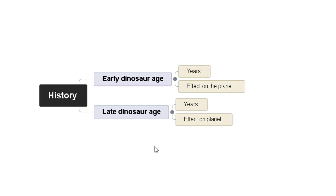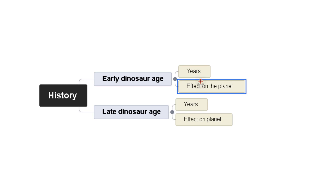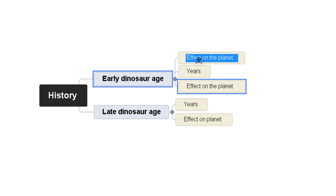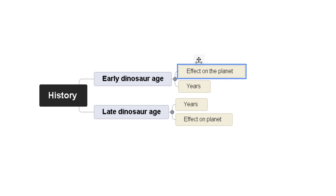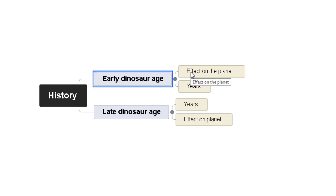As I mentioned earlier, about working from the middle and working clockwise — you might look at that and think, 'Actually, I want to talk about effects on the planet first.' So hold the left button, drag that above, keep dragging to the top, and drop it. You can move branches to different positions. So now my main idea is still History, Early Dinosaur Age, and my sub-branches of Early Dinosaur Age are 'Effect on the Planet' then 'Years', working clockwise.